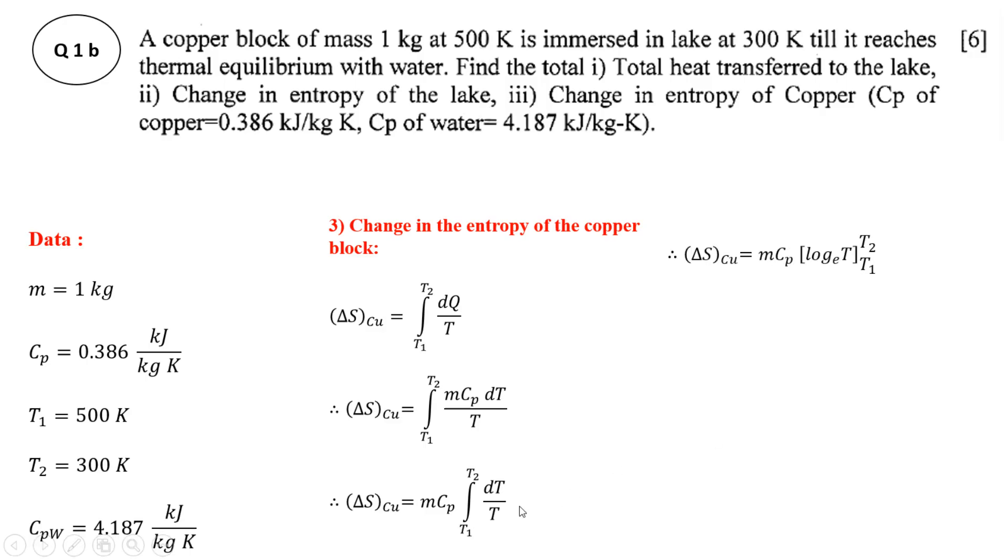So limits are from T1 to T2, so in place of T first substitute the upper limit that is T2 minus the lower limit that is T1. Now log M minus log N is log of M upon N. So substitute the values: mass is 1 kg, Cp of copper is 0.386, and ln of 300 divided by 500.